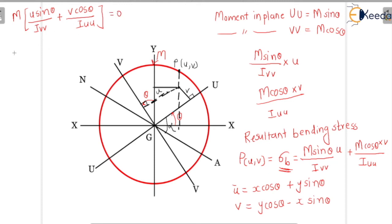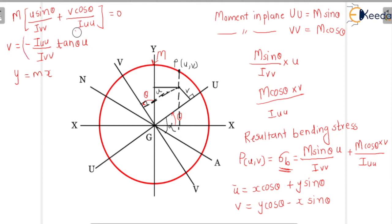From this we get v in terms of u as: v = − (I_UU / I_VV) × tan theta × u. This is the equation of a straight line in the form y = mx, passing through the centroid G. Here the slope m = − (I_UU / I_VV) × tan theta, which is the slope of the neutral axis.